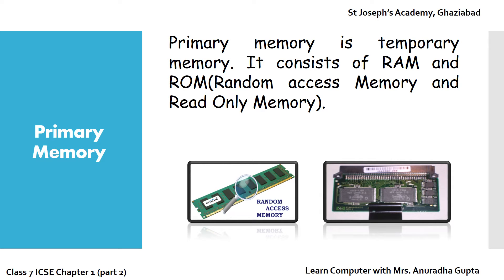Let's learn them in detail. First, we start with Primary Memory. Primary Memory is temporary memory. It consists of RAM and ROM. RAM stands for Random Access Memory, while ROM stands for Read Only Memory. These memories are attached to the motherboard of the CPU.